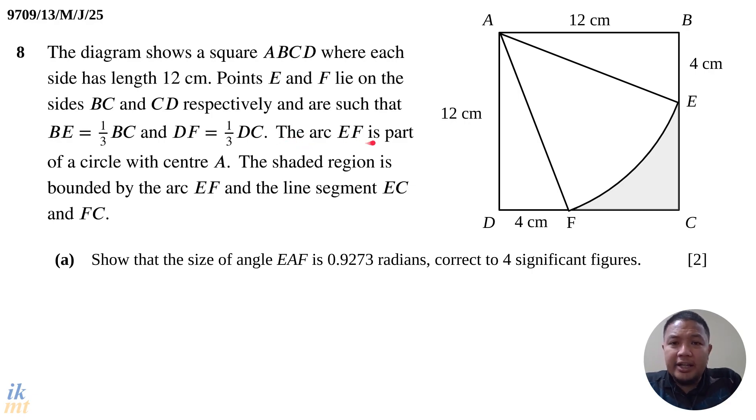The arc EF is part of a circle with center A. That means what we have here is a sector. If EF is the arc of a circle with center A, then AE and AF are radius lines. And therefore, if you have two radius lines connected with an arc, you have a sector.